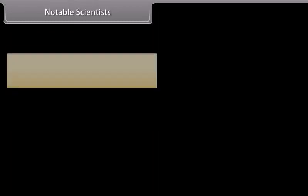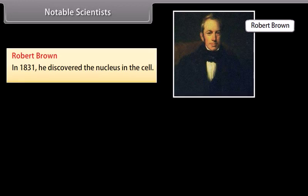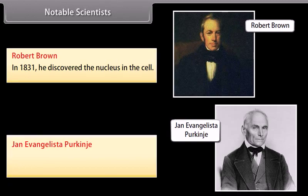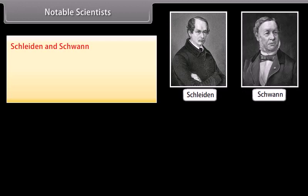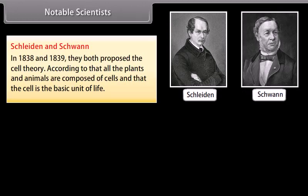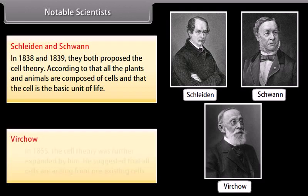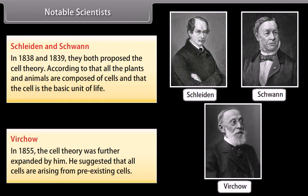Notable scientists: Robert Brown in 1831 discovered the nucleus in the cell. Jan Evangelista Purkinje in 1839 coined the term 'protoplasm' for the fluid substance of the cell. Schleiden and Schwann in 1838 and 1839 both proposed the cell theory — that all plants and animals are composed of cells and that the cell is the basic unit of life. Virchow in 1855 further expanded the cell theory, suggesting that all cells arise from pre-existing cells.